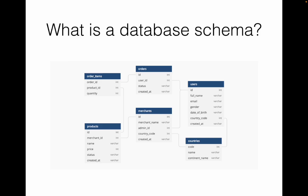A database schema is a blueprint that defines the structure and organization of a relational database. As shown in the diagram, there are different tables and those tables are related to each other via primary key or foreign key relationships — one-to-one, many-to-one, or many-to-many. It basically shows how the data is stored and organized in a database and how different elements are related to each other.